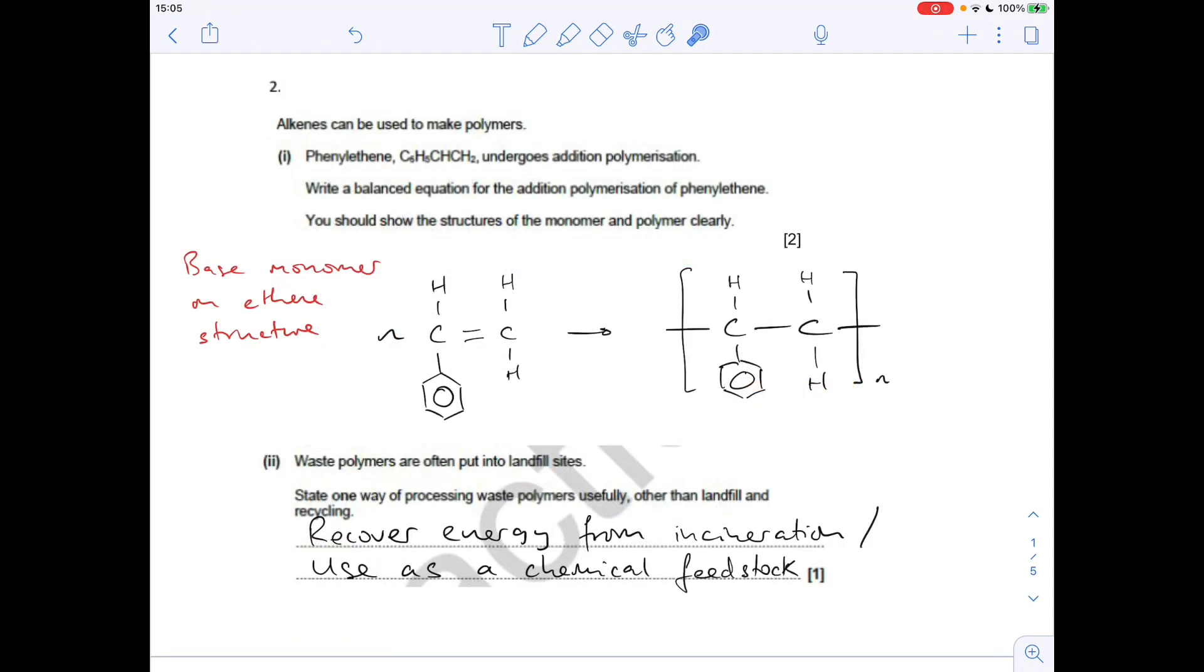Question two is about addition polymerization. We've got this monomer here, phenylethene, and we're going to turn it into polyphenylethene by addition polymerization. So my teacher's top tip, and I've continued it in my teaching career, make your addition polymer monomer look like ethene. So C6H5 is obviously this benzene ring here. The rest of it's just like ethene.